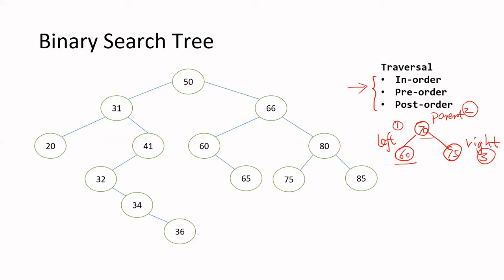In in-order traversal, you print the left child first, the parent second, the right child third — that's what 'in order' means. Pre-order means the parent node goes first, before the others follow. Post-order is the opposite: the parent goes last, so you'd have the left child first, right child second, and the parent as the last node.